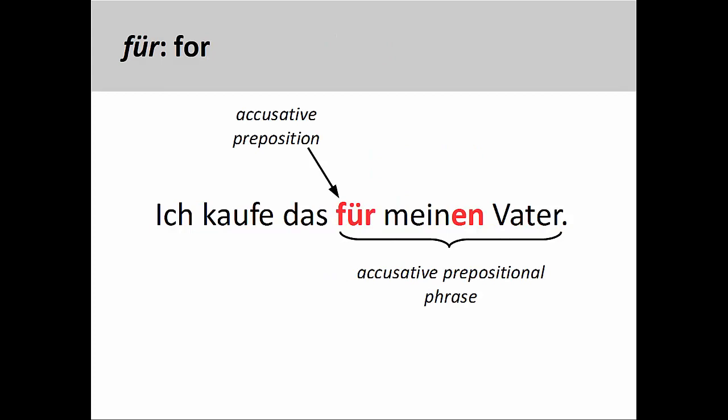The preposition für has the same meaning as the English for, as you see in the sentence: Ich kaufe das für meinen Vater — I buy that for my father. I have marked the masculine accusative ending to show you that everything in the prepositional phrase is in the accusative case.